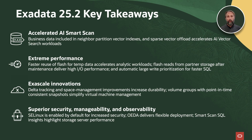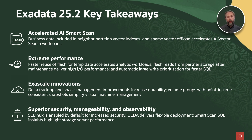Let's talk about the key takeaways for Exadata System Software 25.2. We've accelerated AI Smart Scan with business data included in neighbor partition vector indexes and sparse vector offload accelerating AI Smart Scan workloads. We've focused on extreme performance with faster reuse of flash for temp data, flash reads from partner storage after maintenance delivering high IO performance, and automatic large-write prioritization for faster SQL overall. Exascale innovations including delta tracking and space management improvements increase data durability, and volume groups with point-in-time consistent snapshots simplify virtual machine management. Finally, our constant focus on superior security, manageability, and observability delivers SE Linux enabled out-of-the-box by default for increased security, OEDA delivering flexible deployment options, and Smart Scan SQL Insights highlighting storage server performance. Thanks for joining me as we unpacked Oracle Exadata System Software 25.2.